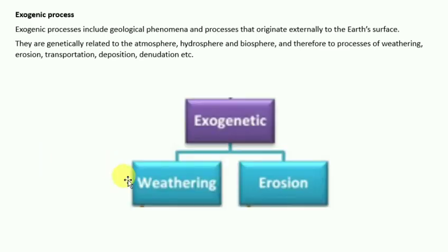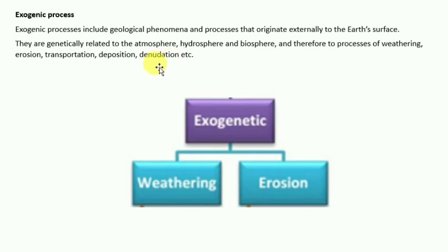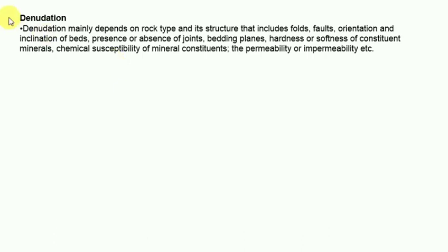Exogenic processes are divided into two forms: weathering and erosion. Denudation means to strip off or to uncover, and it mainly depends on rock type and structure — including fault orientation, inclination of beds, presence or absence of joints and bedding planes, hardness or softness of constituent minerals.